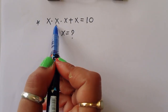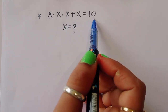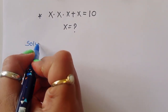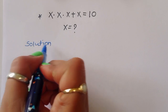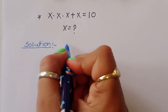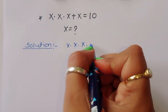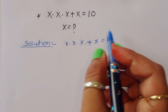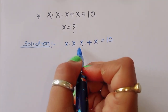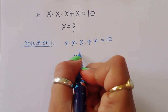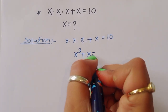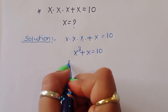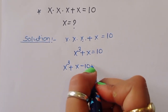The question is: given x times x times x plus x is equal to 10, we have to find out the value of x. Let's see the solution. x times x times x plus x equals 10 — x times x times x we can write as x cubed, so x cubed plus x is equal to 10, giving us x cubed plus x minus 10 is equal to 0.